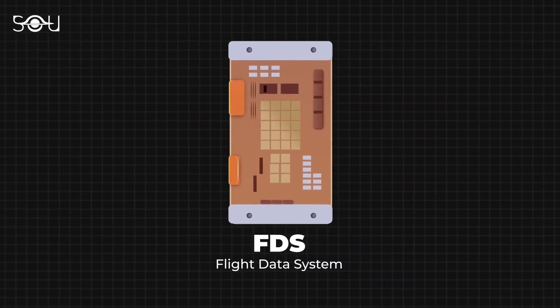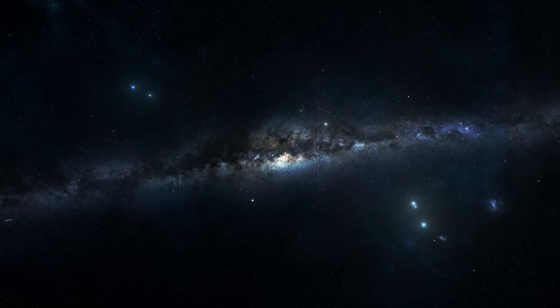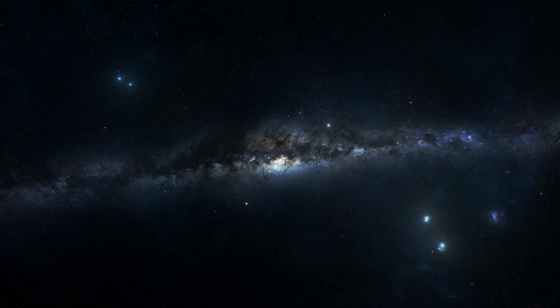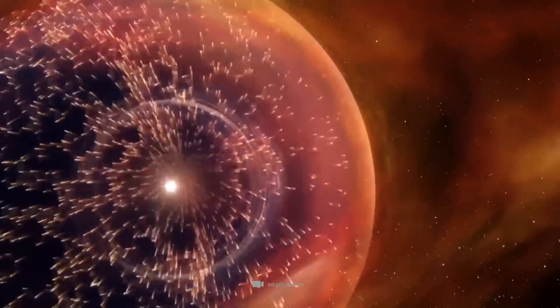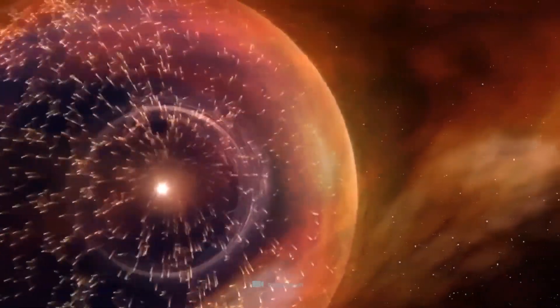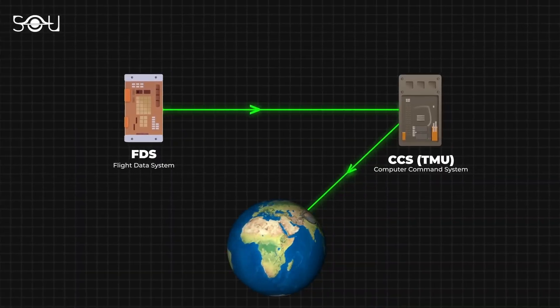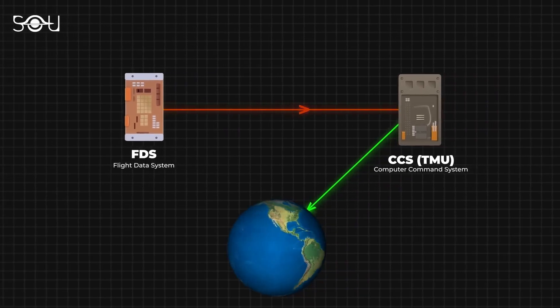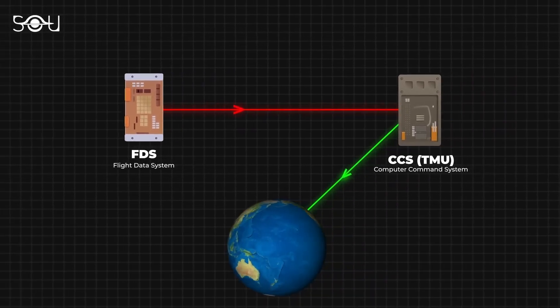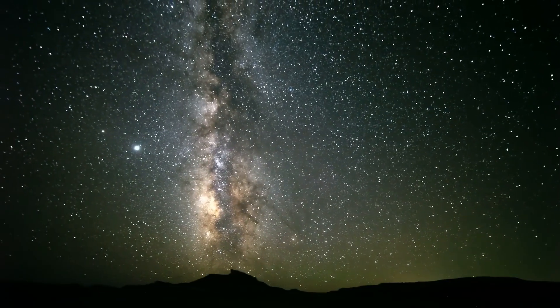Looking ahead, the Voyager team is focused on maximizing the spacecraft's remaining years of operation. They are carefully managing its power resources and monitoring its systems to ensure that it continues to send valuable data. With the telemetry system back on track, the team can collect crucial scientific information about cosmic rays, magnetic fields, and other phenomena in regions of space that we have never been able to study before.